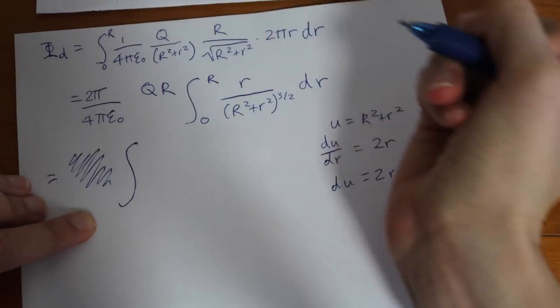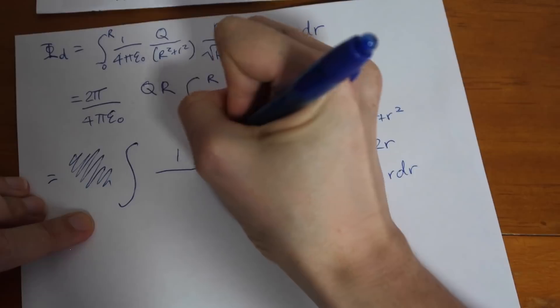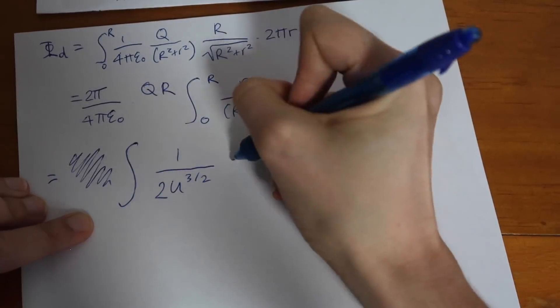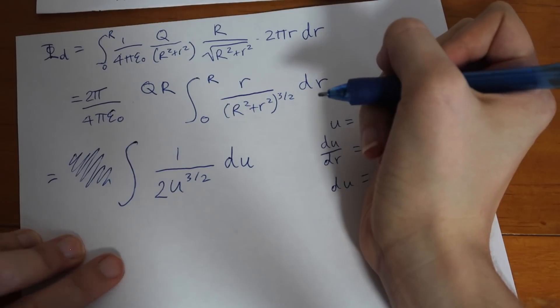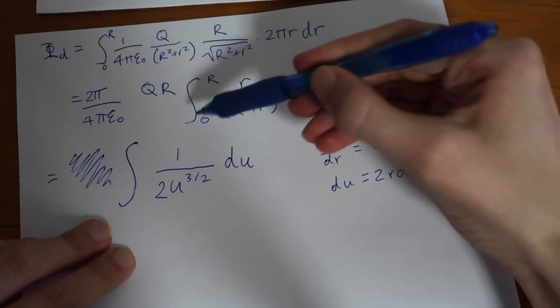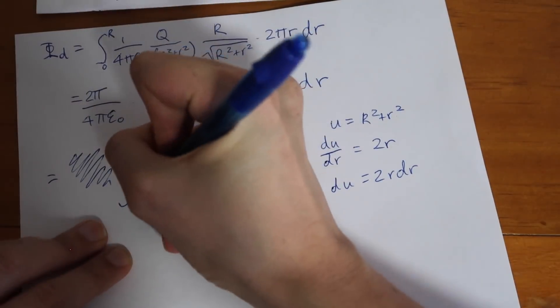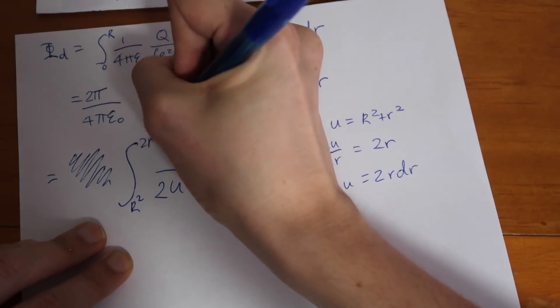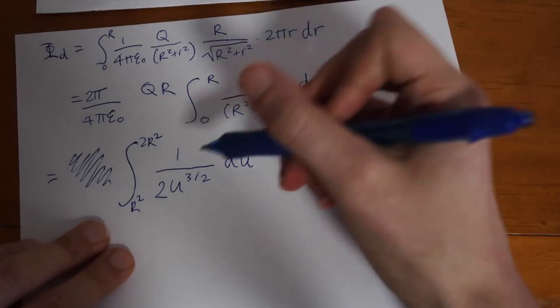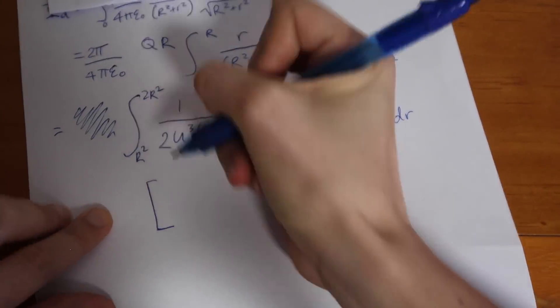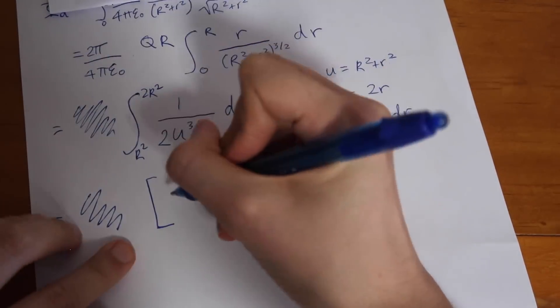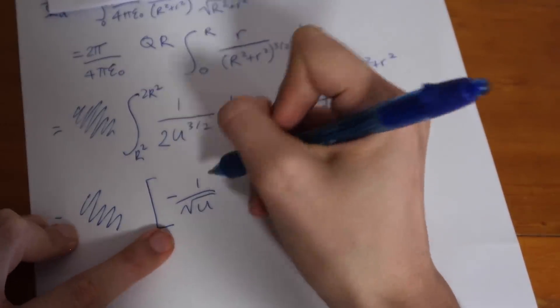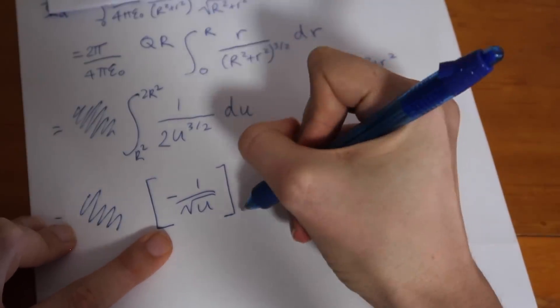What we have left with is this right here. Okay, so we're going to take a gulp of air and do a little substitution to integrate this. Our substitution is going to be that u is equal to this down here which means that du dr would be 2r meaning that du is 2r dr. Now we can spot an r dr in our integral here so we can replace that with du over 2 and let's go through.